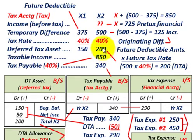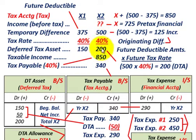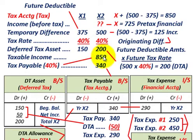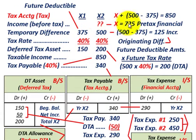Before we move on to the valuation account, let's look at how we'd calculate our income before taxes. It's not given to us, but based on our temporary differences and our taxable income — we're given taxable income of $850,000 — we're going to use these two temporary differences to determine what our income before taxes, or pre-tax income, is.